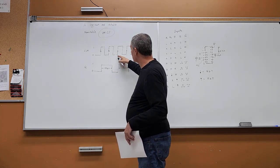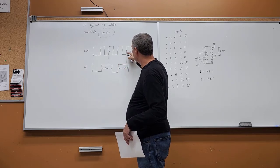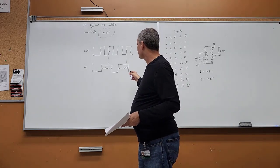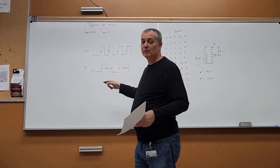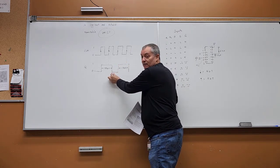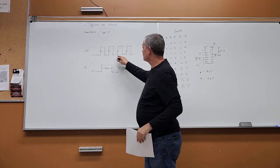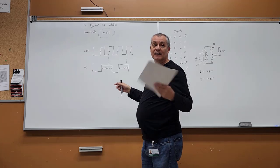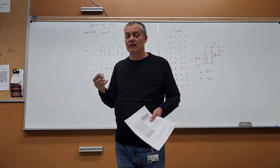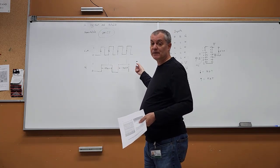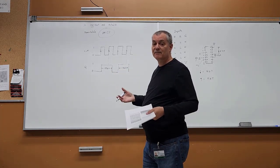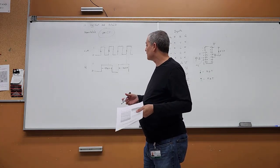When you look at it on the scope, if the chip is non-retriggerable, the retriggers are ignored and you still see individual 50 microsecond pulses. As you increase the frequency, the pulses just get closer together. Even with two or three retrigger attempts within one pulse, they're all ignored. That's how you can experimentally confirm it's non-retriggerable.